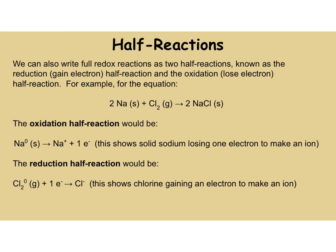Another way we can write redox reactions is through half reactions — the reduction half reaction and the oxidation half reaction. For the example of sodium plus chlorine gas giving sodium chloride, the oxidation half is neutral sodium solid becoming sodium ion plus an electron. The reduction half is neutral chlorine gaining an electron to become the chloride ion. These are just the half reactions, briefly introduced in case you see them later in your science career.